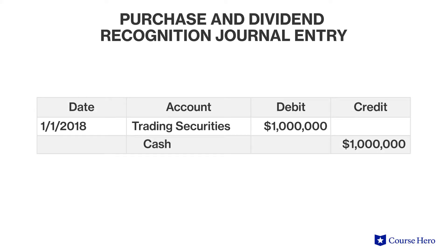For example, Lucky Corporation purchases 10% of Money Corporation for $1 million on January 1, 2018. At the end of the year 2018, Money Corporation announces it will be paying out a dividend of $20,000 to its shareholders. The initial purchase and subsequent dividend are recognized with a journal entry on the books of Lucky Corporation. This entry recognizes a current asset called trading securities recorded at cost, as well as an outflow of cash.